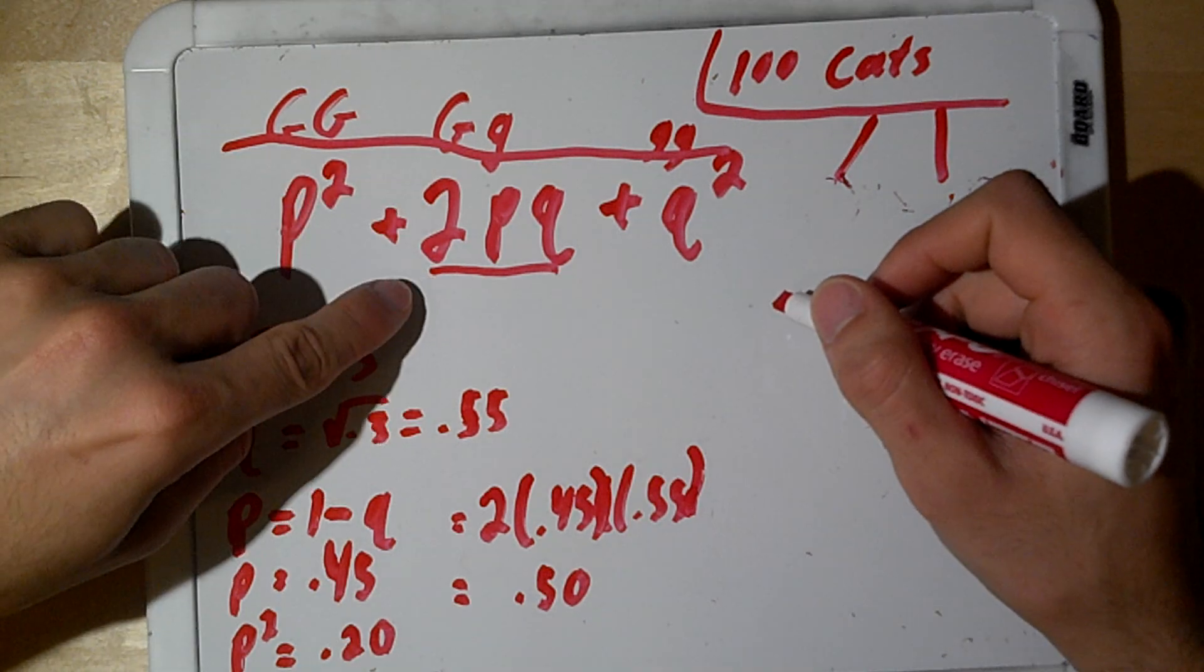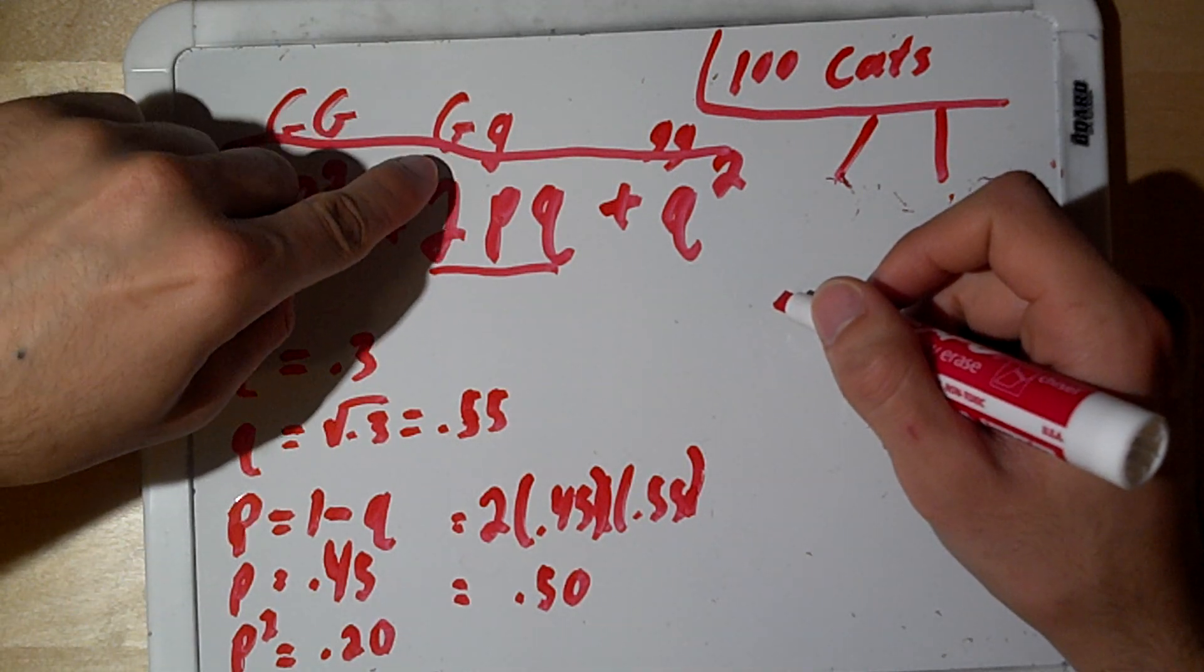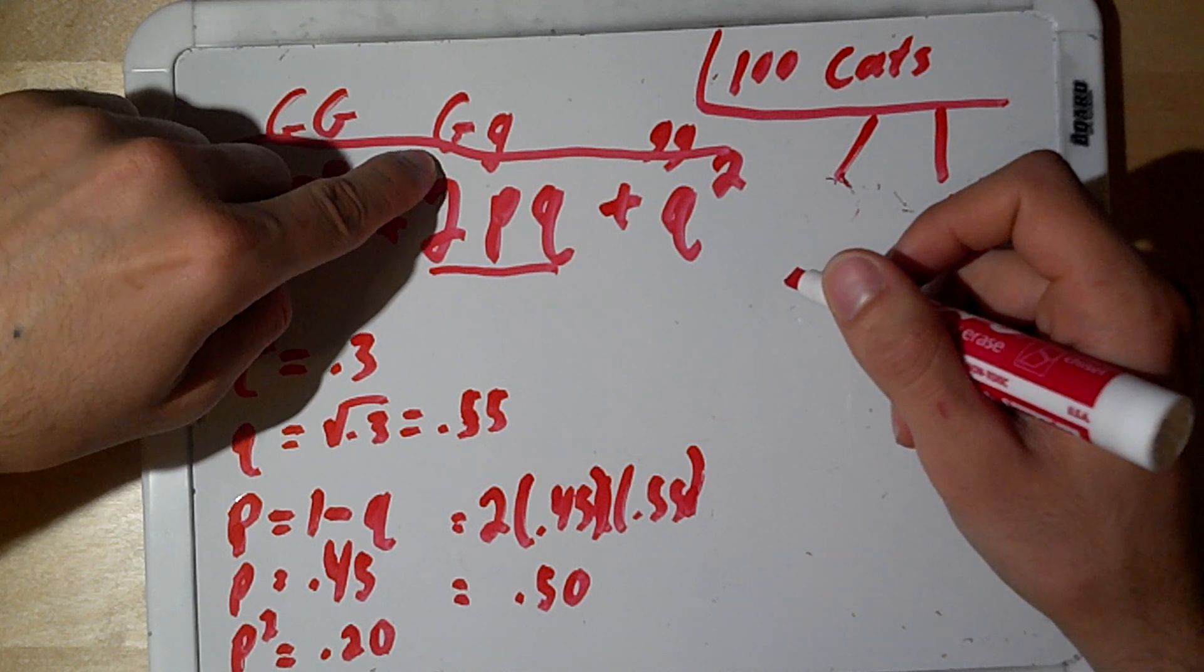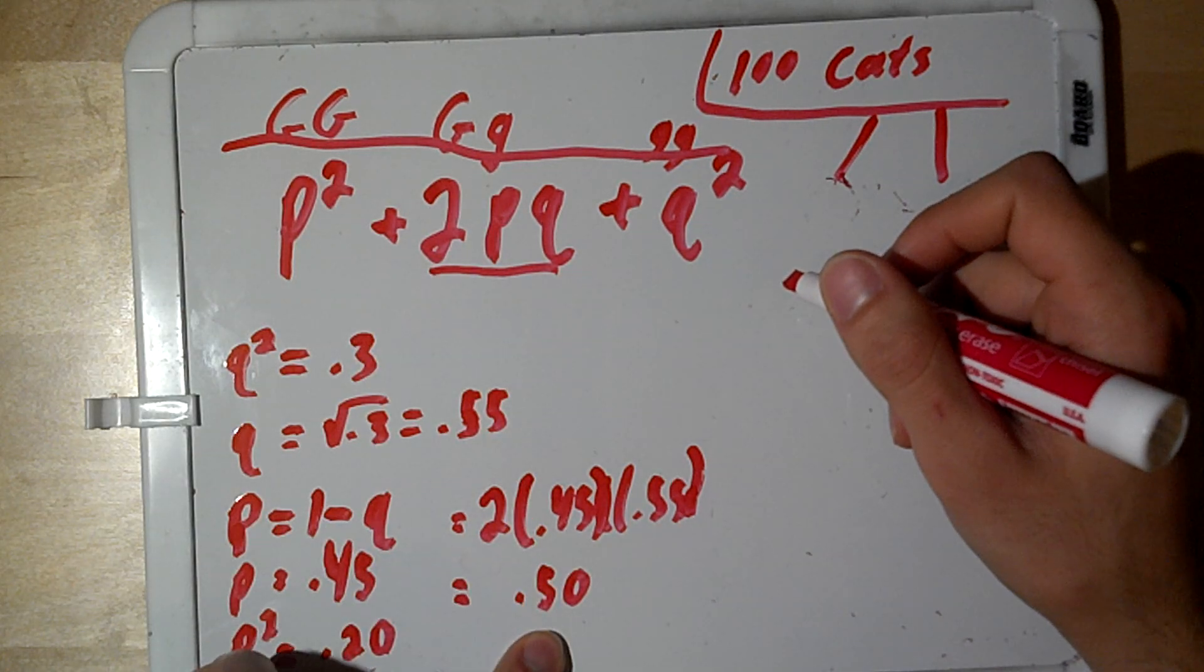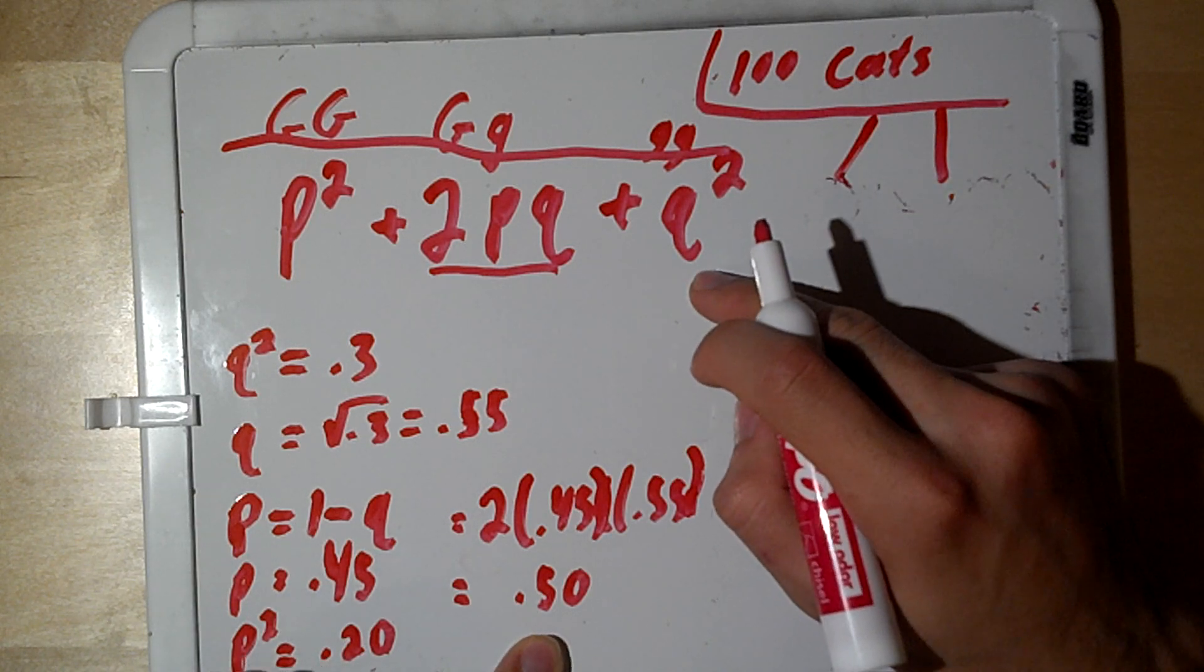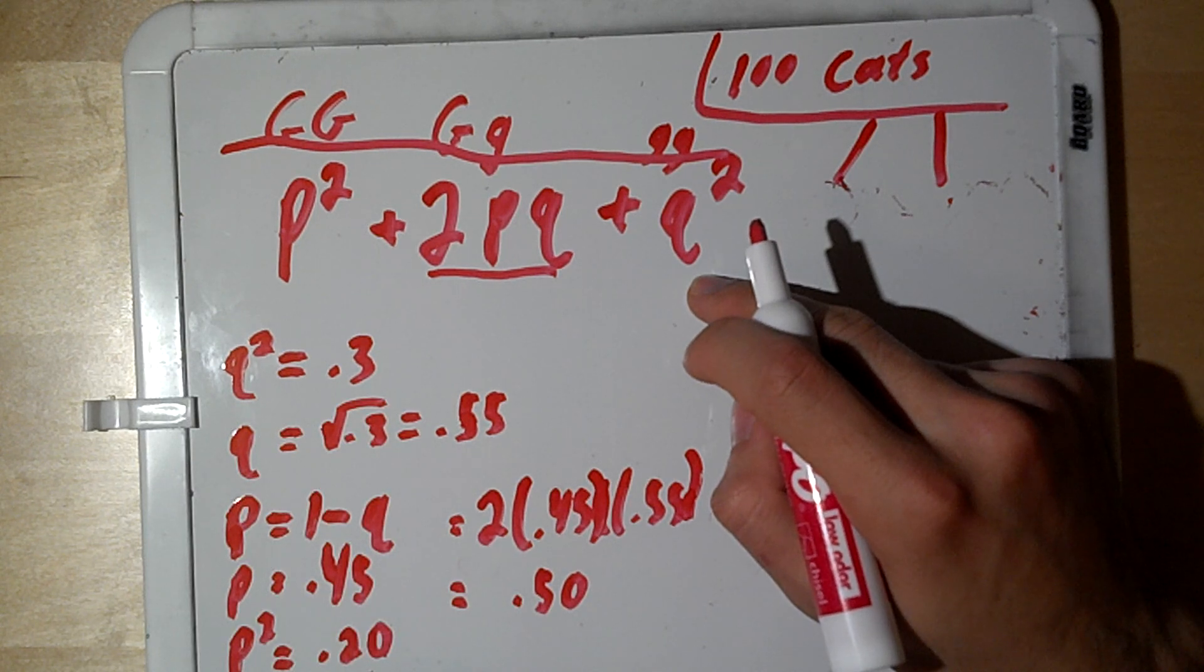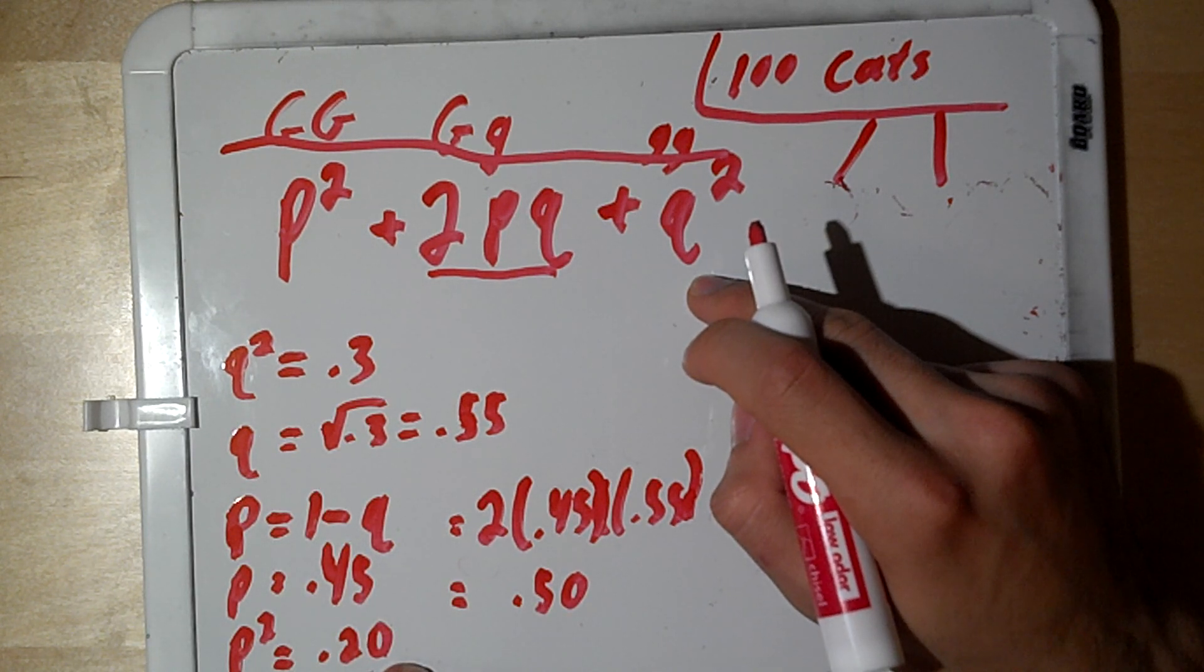And we know that the allele frequency of this genotype, capital G, little g, is going to give us approximately 50%. And q², we found to be 0.3. So, we know what the allele frequency is for this population of 100 cats.